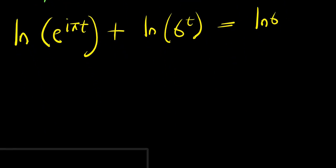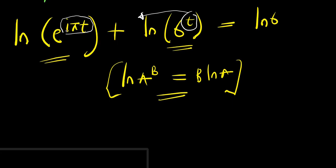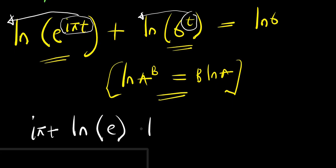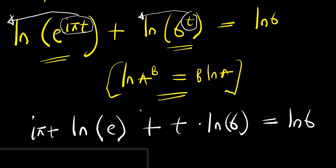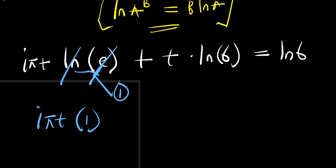We also apply the property ln(a^b) equals b times ln(a) to both log terms. The iπt comes in front of ln of e, and the t comes in front of ln of 6. Since ln of e equals 1, we get iπt times 1 plus t times ln of 6 equals ln of 6.